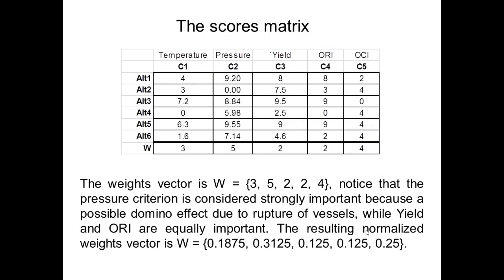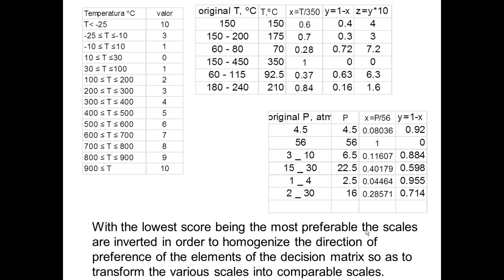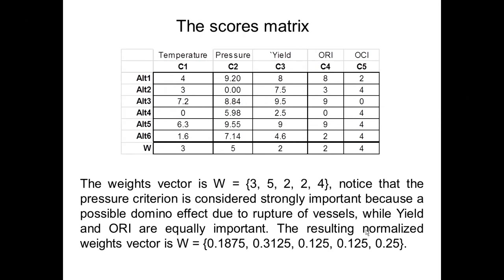This is the final decision matrix. The weights vector is W equal to 3, 5, 2, and so on. 3 is the weight for the temperature criterion, 5 is the weight for the pressure criterion, and so on. Notice that the pressure criterion is considered strongly important because of a possible domino effect due to rupture of vessels, while yield and the overall reaction index are equally important. The resulting normalized weight vector is given here.